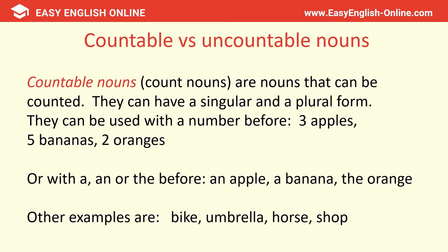We also have countable versus uncountable nouns. Countable nouns are nouns that can be counted — they have a singular and a plural form. They can be used with a number before them, like three apples, five bananas, two oranges, or with an article: a, an, or the — so an apple, a banana, an orange. Other examples are bike, umbrella, horse, and shop.